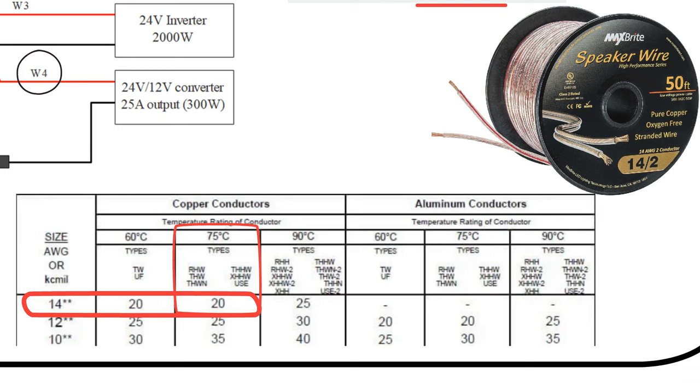Many speaker wires on Amazon are made of copper clad aluminum, which I don't recommend because it has a higher resistance and can carry less current. If you use aluminum wires, refer to the aluminum conductors part of the table. These can carry less current, so the size needs to be increased.